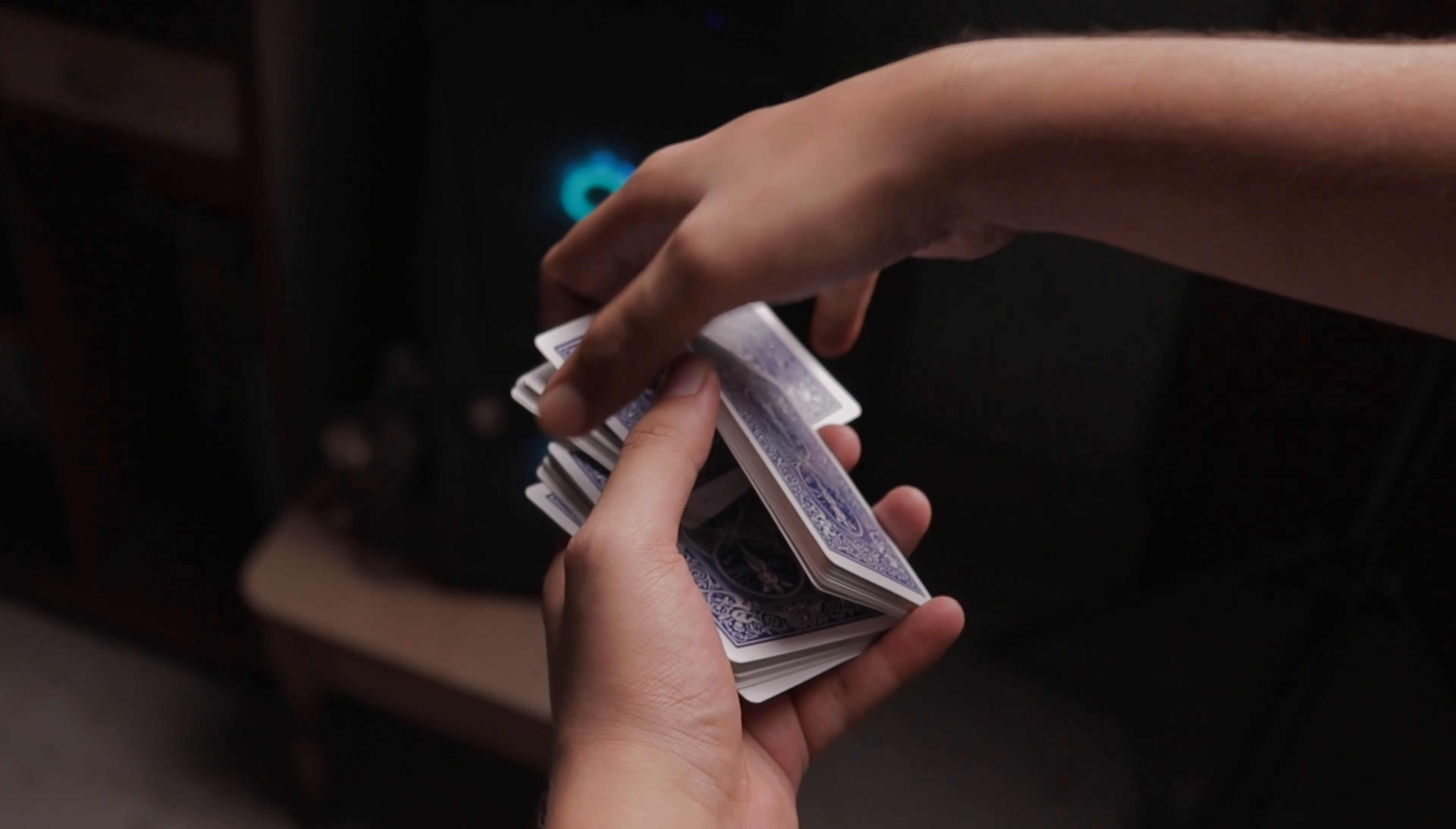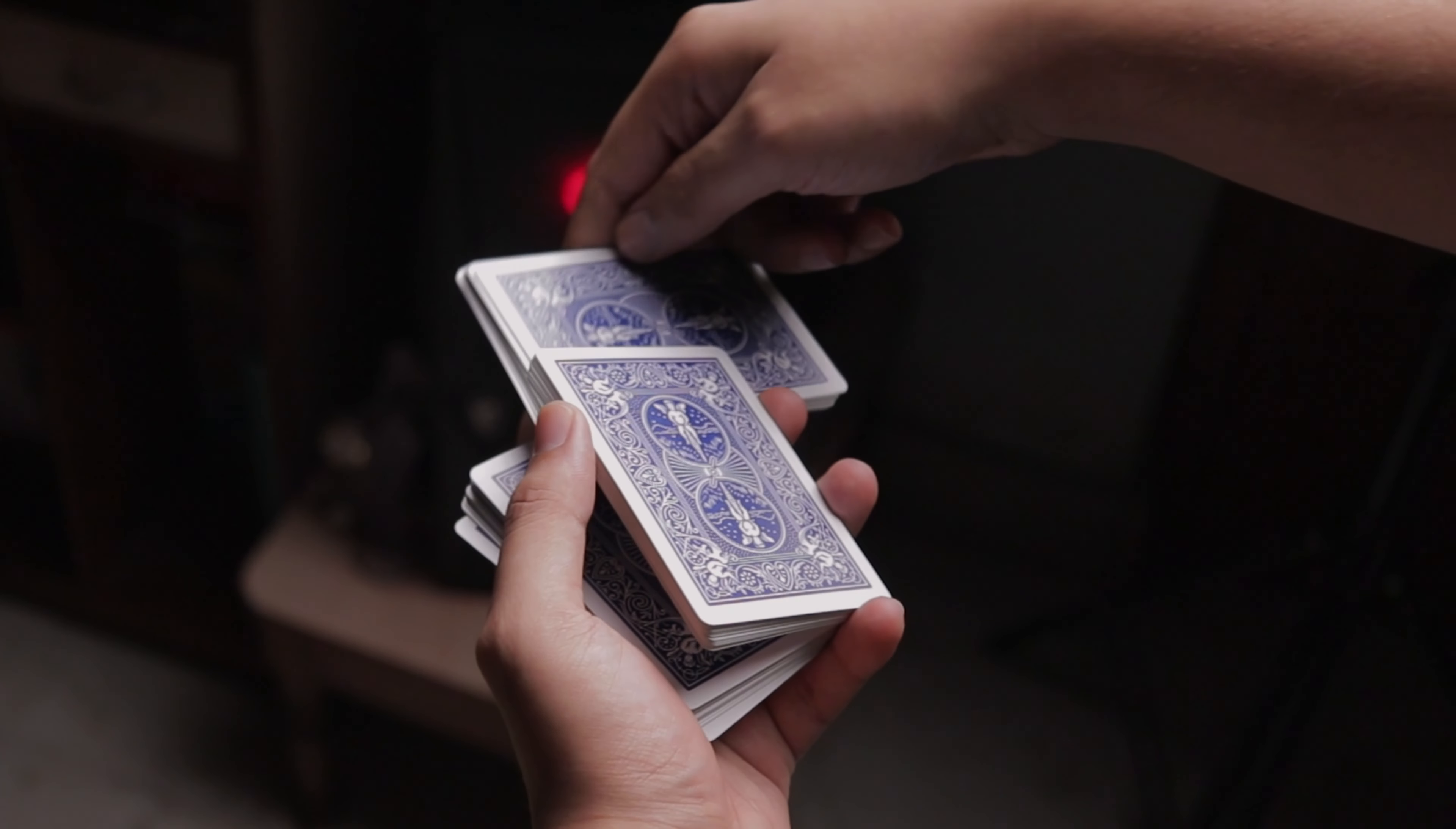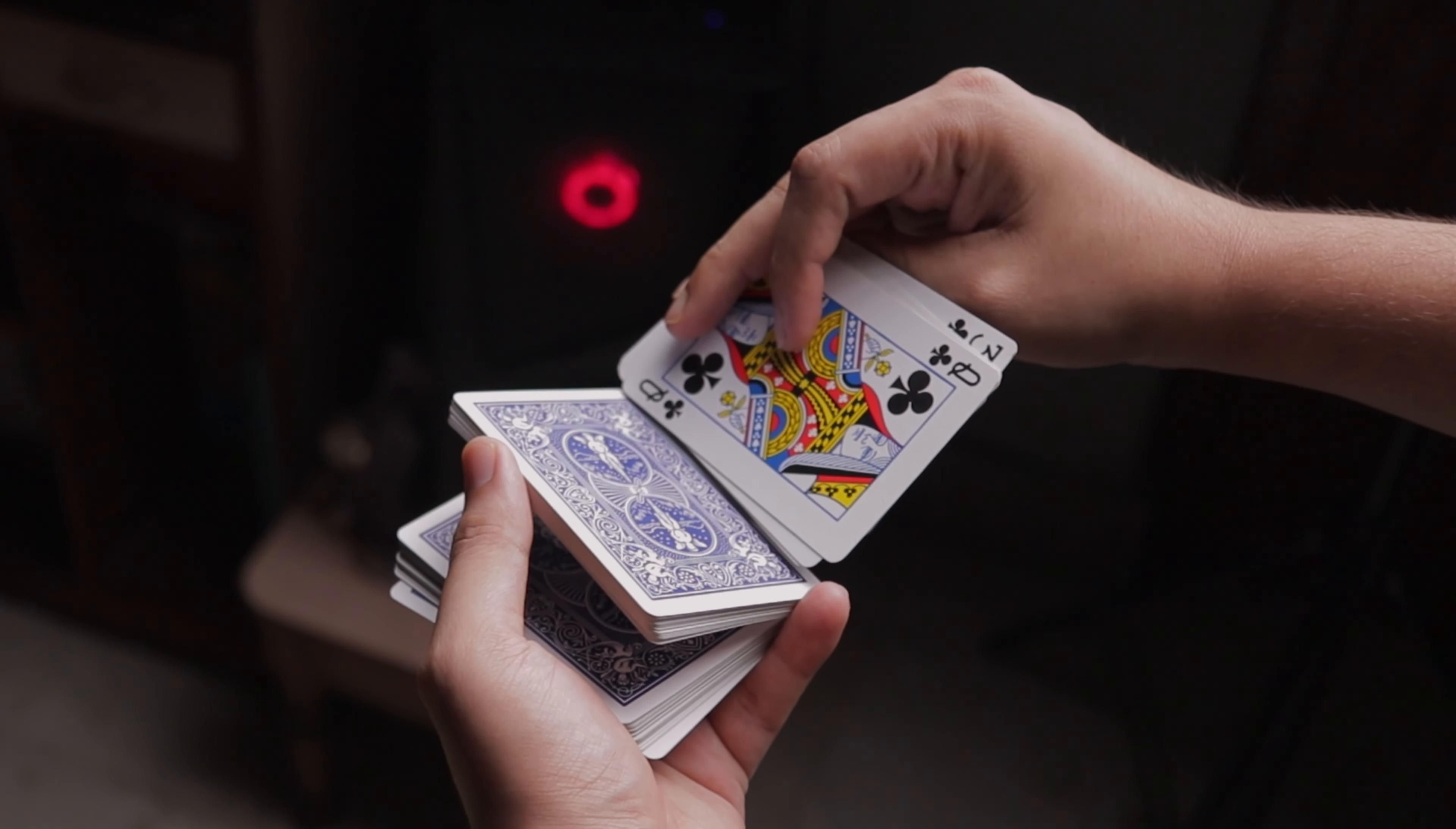And once you grab the top packet, you entirely pull this - not pull exactly, you basically rotate this packet out. Then all you do is use these fingers to twist it, and then use the index finger to do the charlier cut.